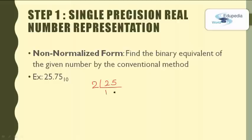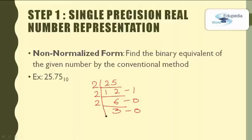The quotient is 12 and the remainder is 1. Divide the quotient 12 by 2 — the new quotient is 6 and the remainder is 0. Divide 6 by 2 — the quotient is 3 and the remainder is 0. Divide 3 by 2 — the quotient is 1 and the remainder is 1. So the binary representation of 25 is 11001.